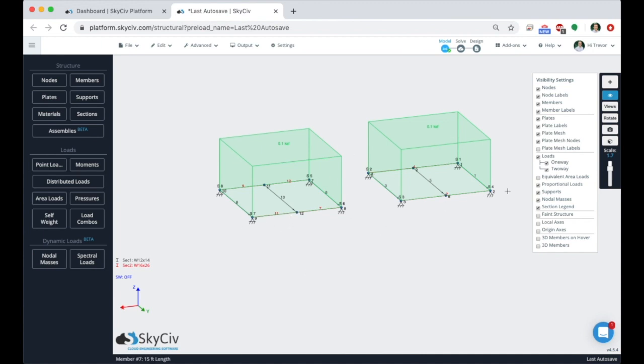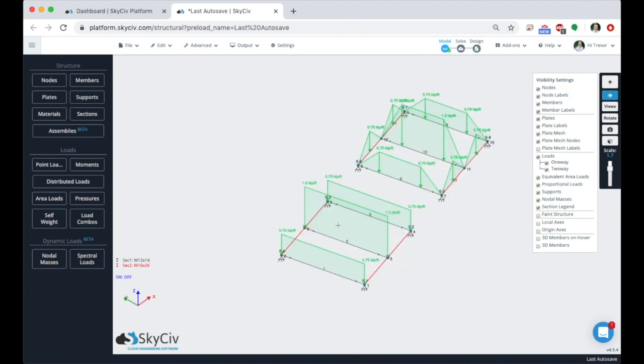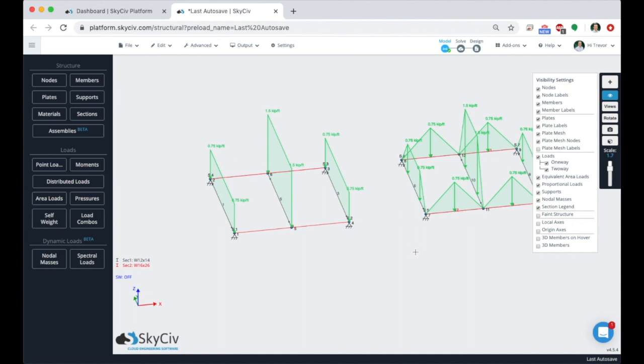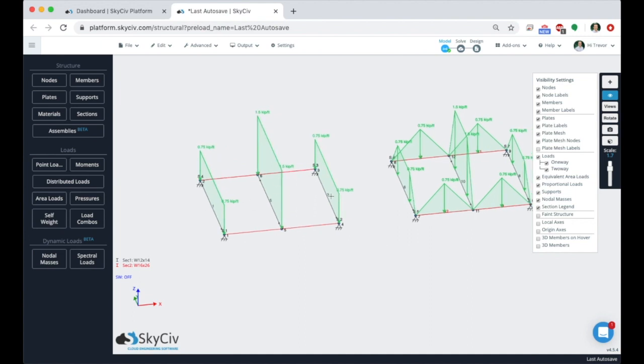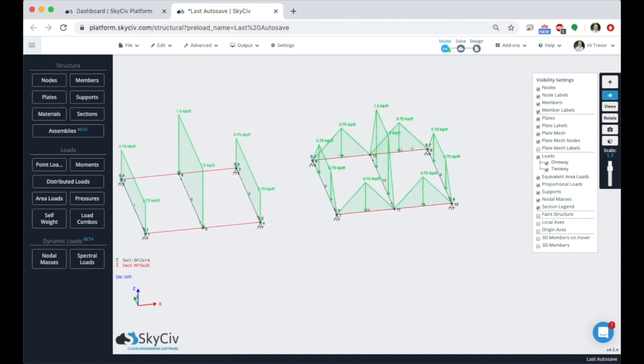Now using the SkySiv equivalent area load function, we can see how these loads are going to distribute. So again, one of them is one-way and one of them is two-way. So we can see, I actually have it flipped around. This is our one-way loading situation and this is our two-way loading situation.